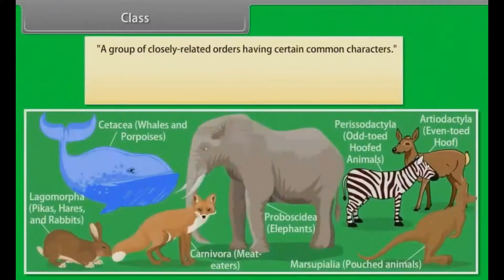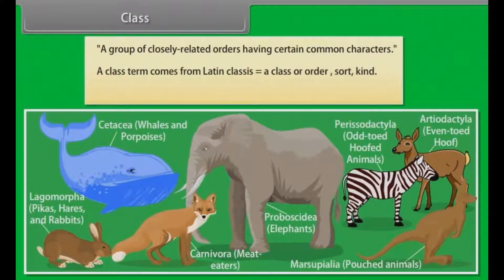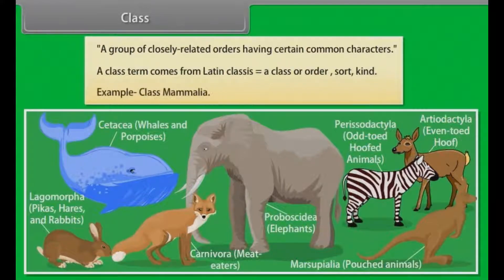Class is a group of closely related orders having certain common characters. The term class comes from Latin 'classis,' meaning a class, order, sort, or kind. Example: class Mammalia.